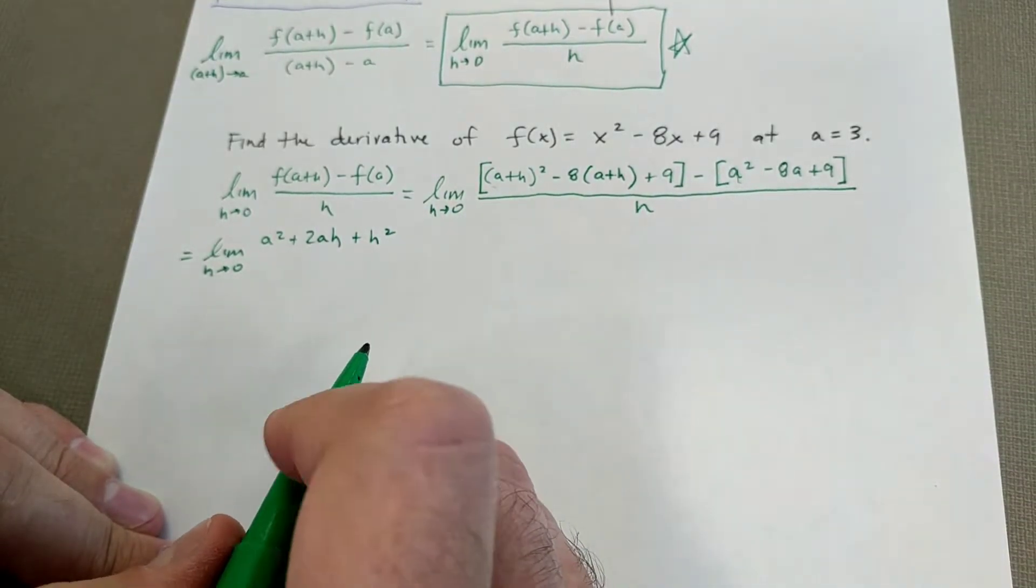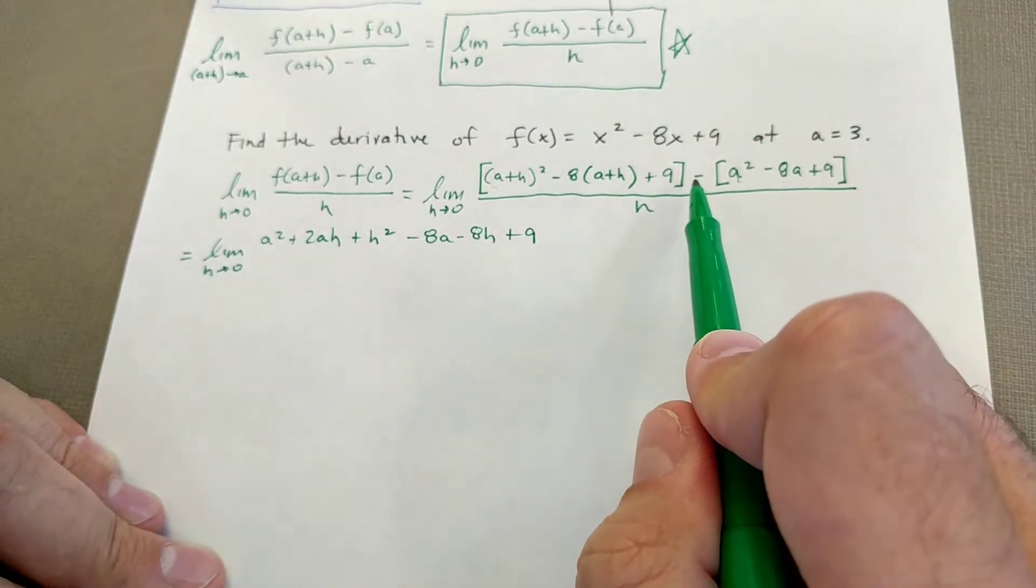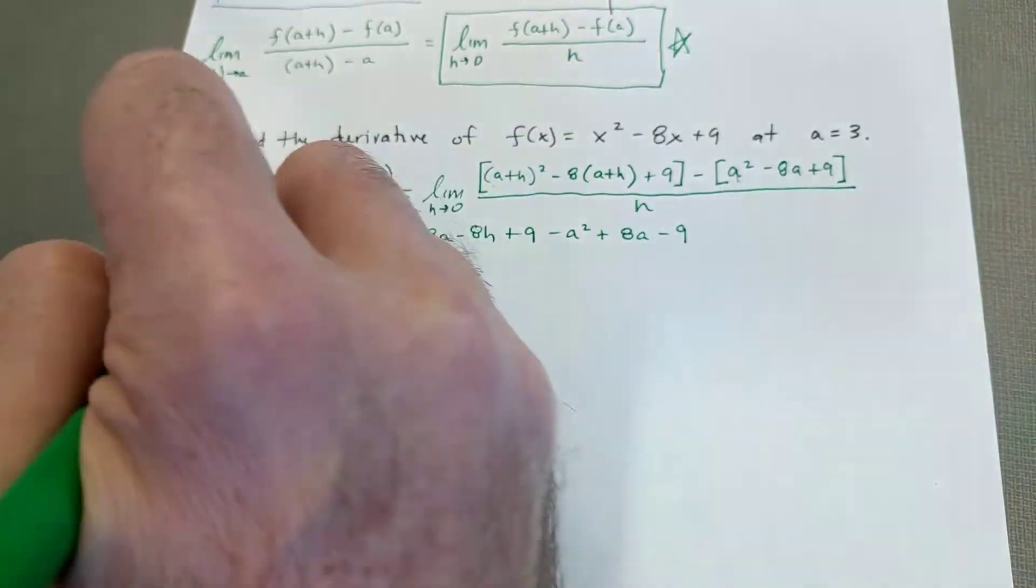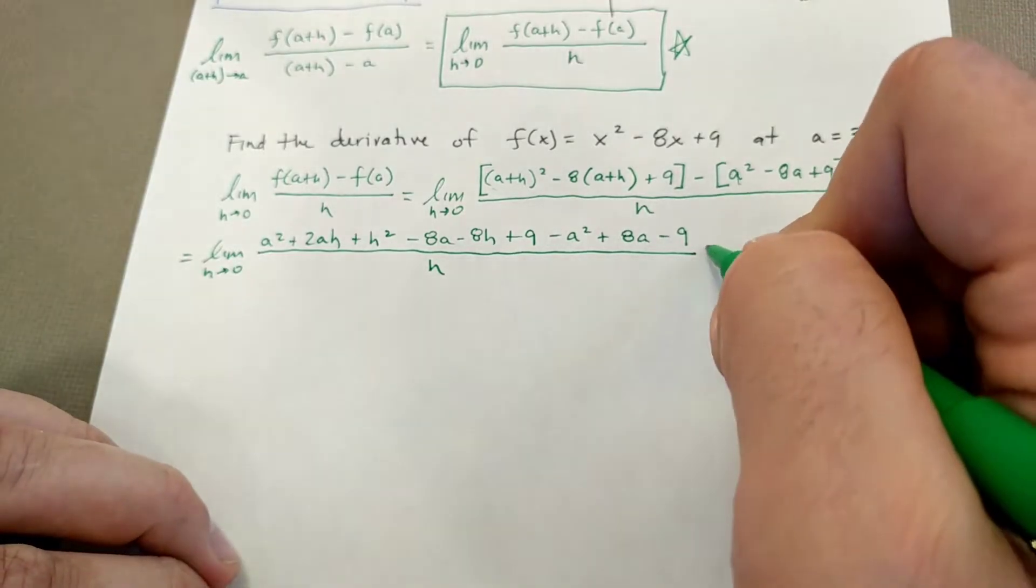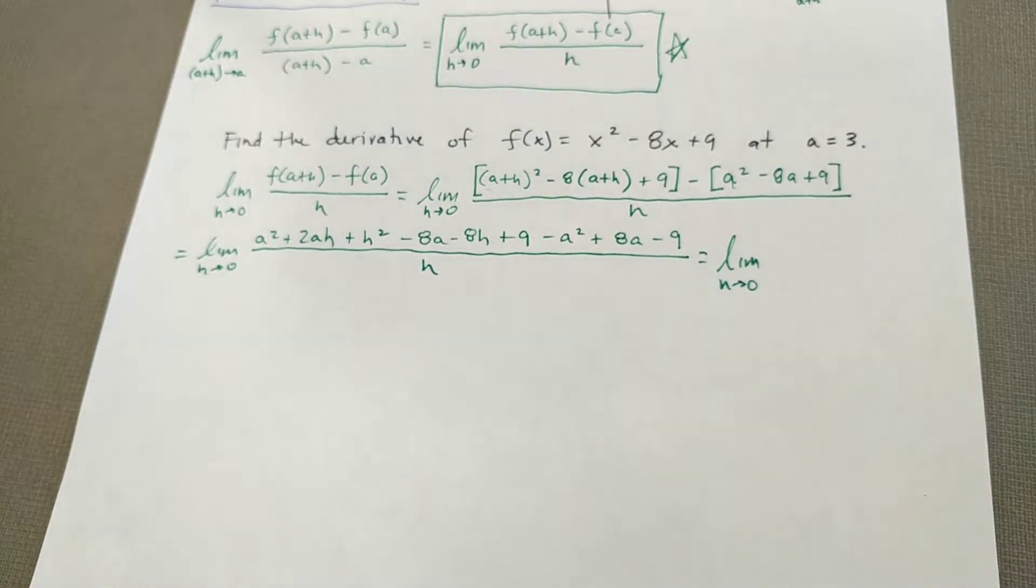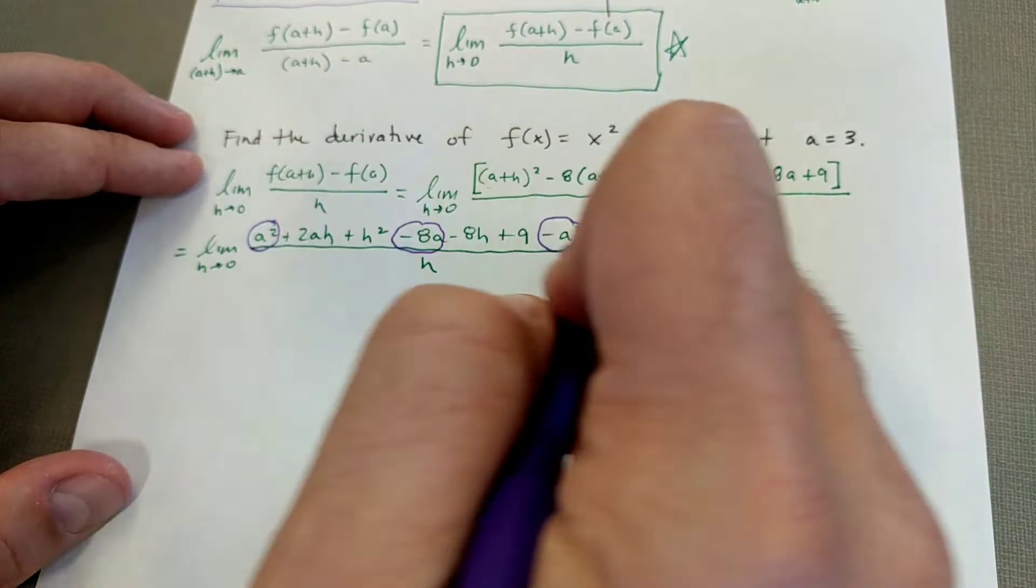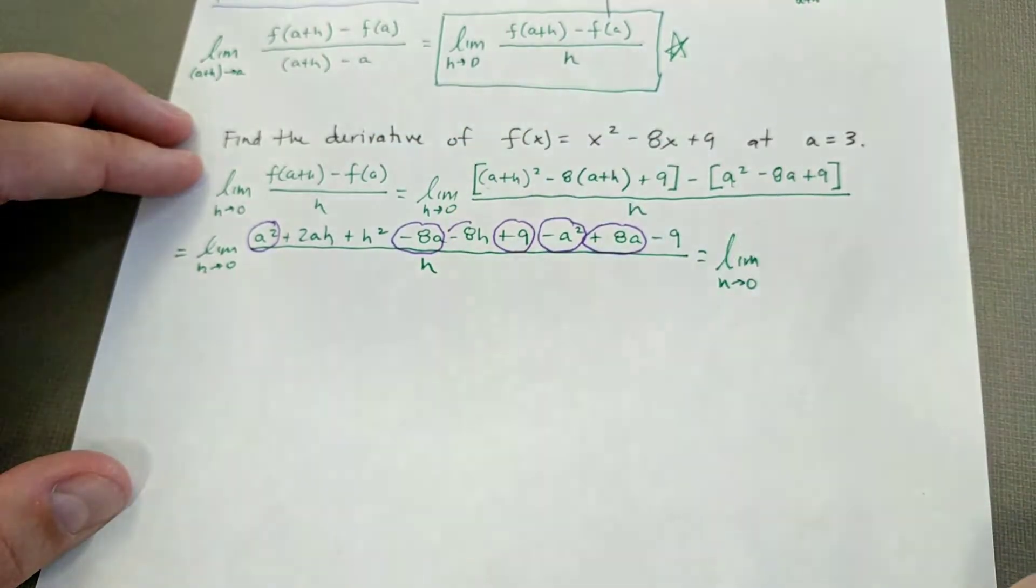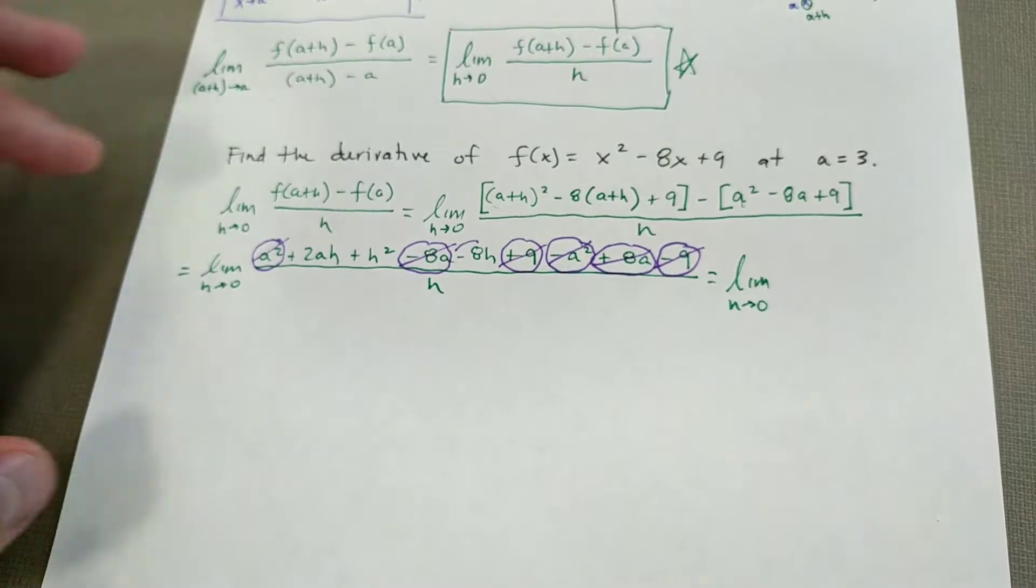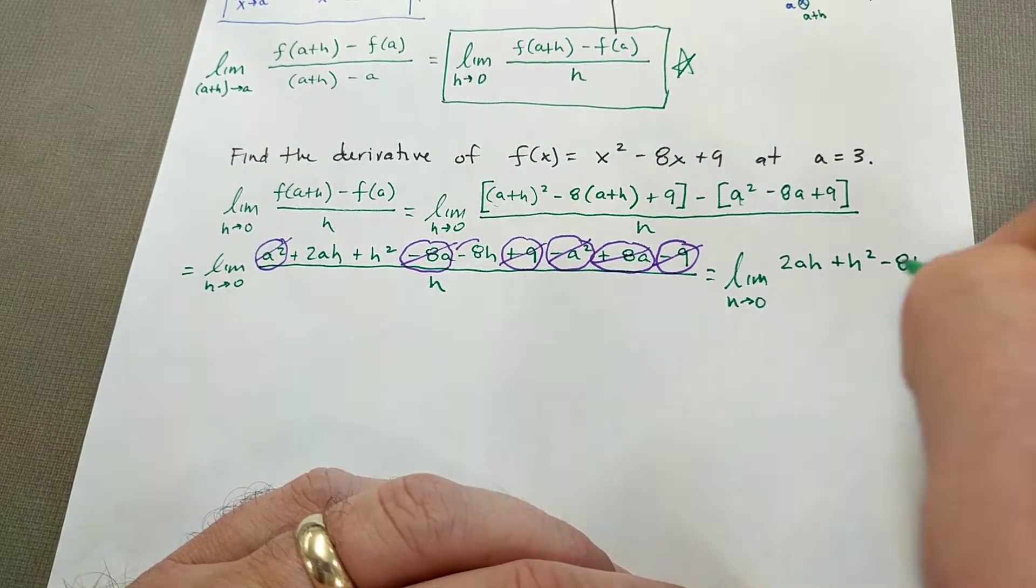So the first thing I want to do is I want to expand and distribute as much as possible here. So I want to get rid of all of those grouping symbols. So we got A squared plus 2AH plus H squared. That's what you get when you expand this. Distribute the negative 8 plus 9. And now let's distribute this negative here. So we're going to get minus A squared plus 8A minus 9. And that is all over H. So now what happens? Well, this is where we take a pause to notice that we got a lot of things that add to 0 in our numerator here. We've got a positive A squared and a negative A squared. We've got a negative 8A and a positive 8A. And we've got a positive 9 and a negative 9. So those things add to 0.